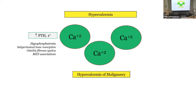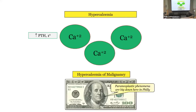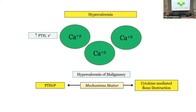To summarize primary hyperparathyroidism: hypophosphatemia, subperiosteal bone resorption, osteitis fibrosa cystica, and association with MEN syndromes. Next: hypercalcemia of malignancy. This is a true story — in Philadelphia where they write the exam, paraneoplastic phenomena are a big deal. Mechanisms do matter and they will make the distinction between PTH-related protein and cytokine-mediated bone destruction.